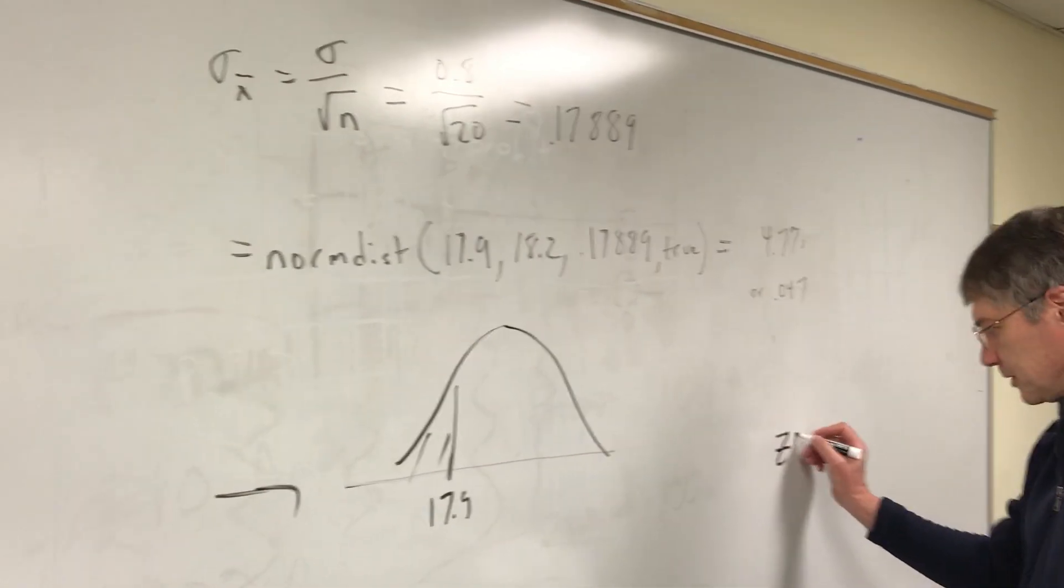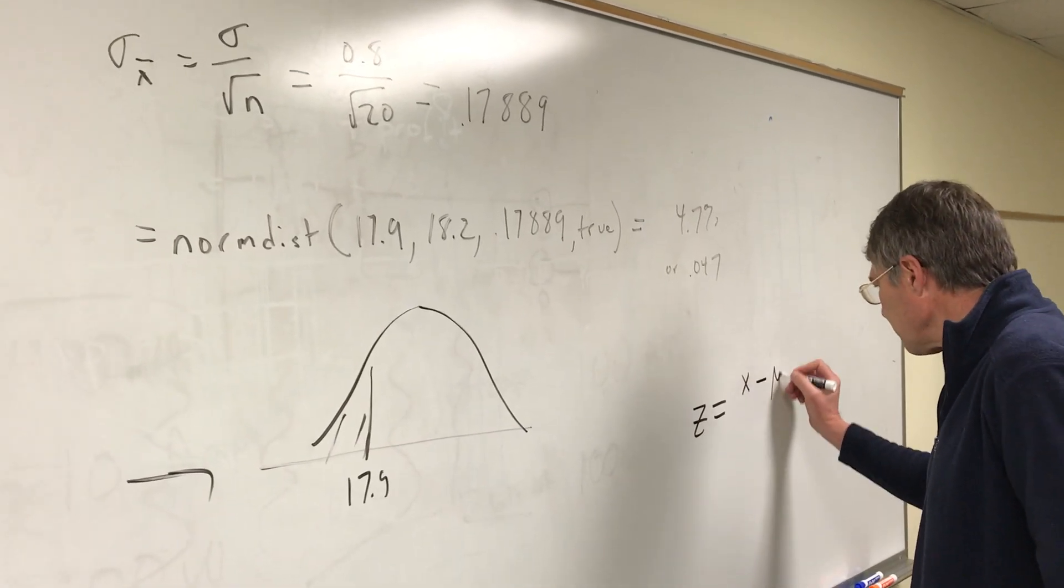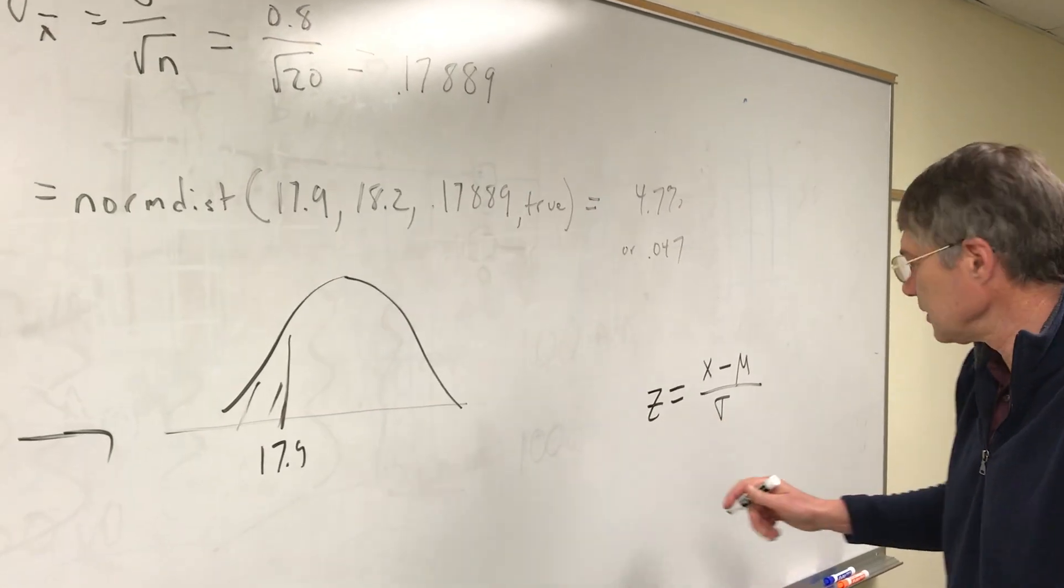I'm going to go over here where I got some open space. What that is, your point of interest minus your population mean divided by standard deviation. Now again, I'm going to use the standard deviation of the means.